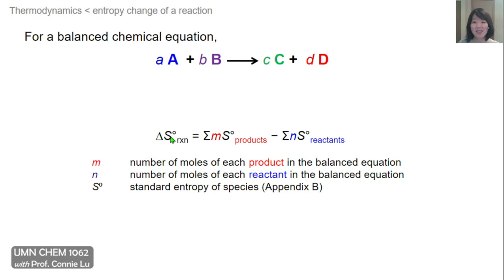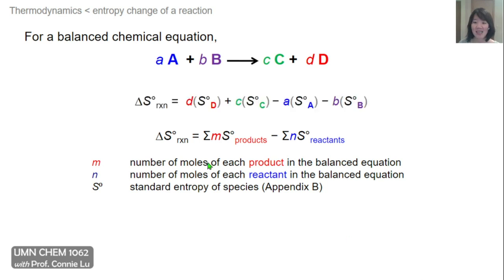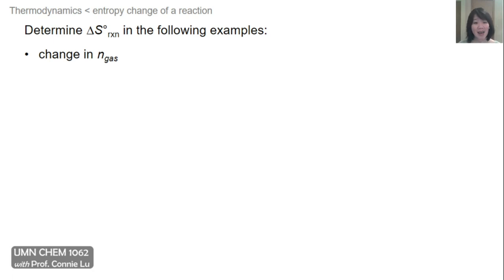Using this relationship, we can look at a balanced chemical equation where A and B are reactants, C and D are products, and the lowercase letters represent the stoichiometric coefficients. We can write delta S of the reaction as: coefficient d times entropy of D, plus coefficient c times entropy of C, minus coefficient a times entropy of A, minus coefficient b times entropy of B. In certain problems, you're asked to qualitatively assess whether the entropy change will be positive or negative, but we can also do this quantitatively.